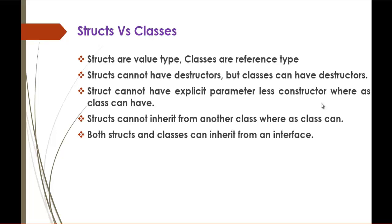Structures vs. Classes: Structs are value type and classes are reference type. To know what is value type and reference type, please refer to my video 3 where you will get a clear cut explanation. Here the major difference is structs are value type and classes are reference type. And structs cannot have destructors but classes can have.